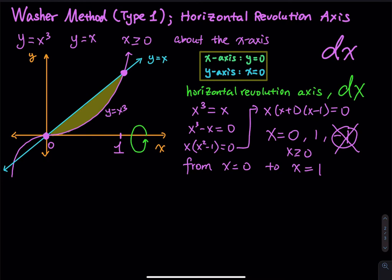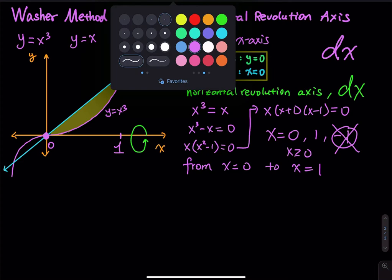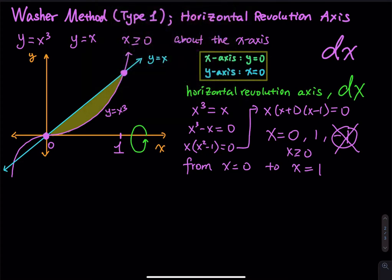We are going to spin this area about the x-axis. How do you know this is a Washer's method and not a disk method? When you spin this area 360 degrees about the x-axis, picture it in your mind. Do you spin the green space between the curves? The answer is no. After spinning, there is some space inside the three-dimensional object — that green space remains. Do we agree with that? Yes. If that is the case, then this is a Washer's method. The disk method has no space inside.